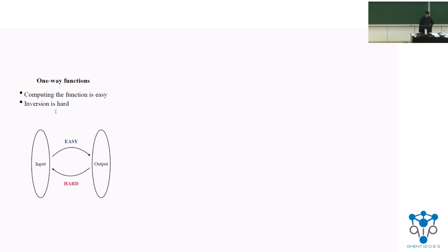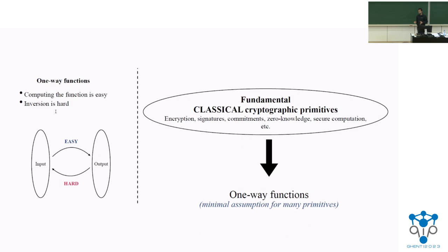A one-way function is a function that is easy to compute and hard to invert — given an input, a deterministic polynomial-time algorithm computes the output, but given the output, an efficient algorithm will not be able to recover the pre-image. One-way functions are a fundamental primitive in cryptography: most of the primitives you are aware of probably imply one-way functions, so in some sense one-way functions are necessary for the existence of cryptography.